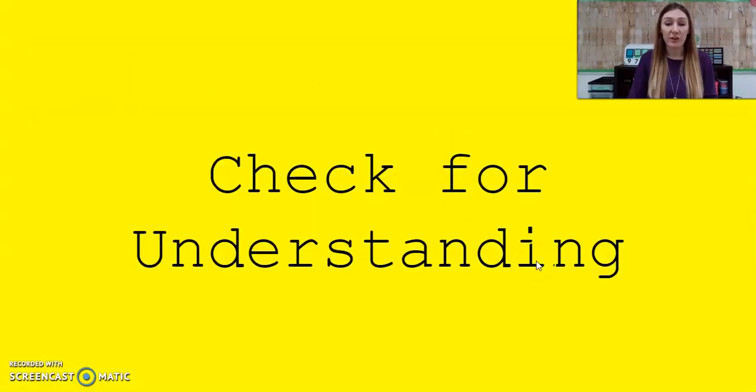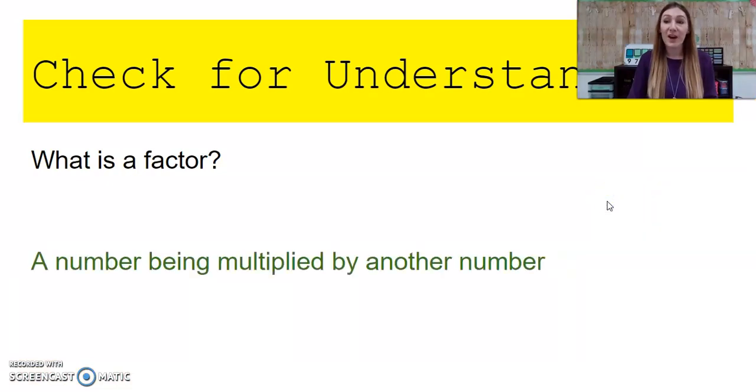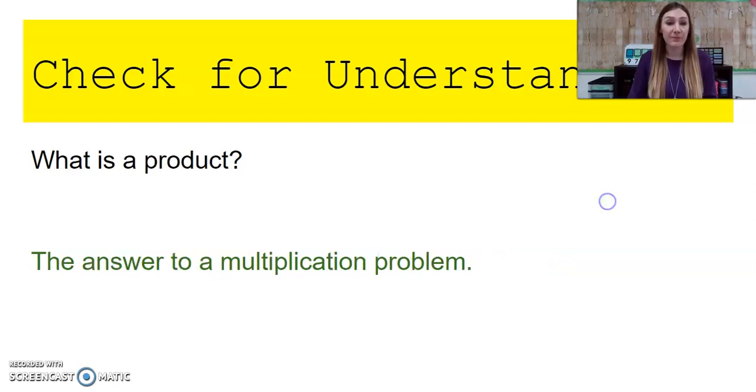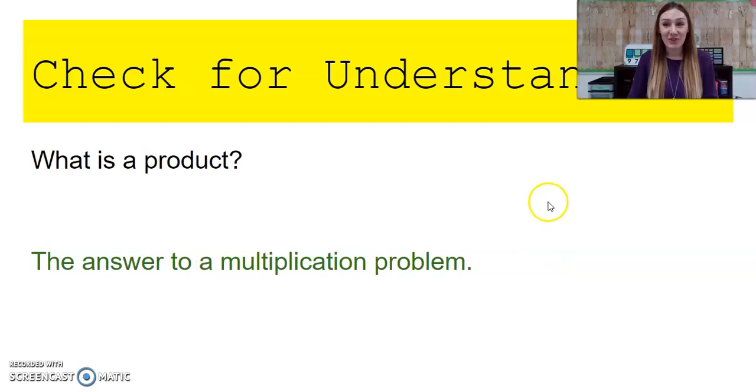Let's do a quick check for understanding. What is a factor? A factor is a number being multiplied by another number. What is a product? A product is the answer to a multiplication. Sorry about that, skipped a slide.